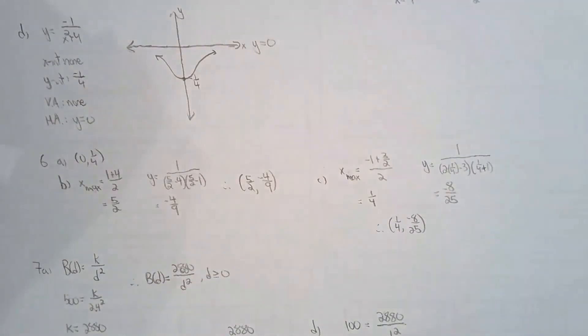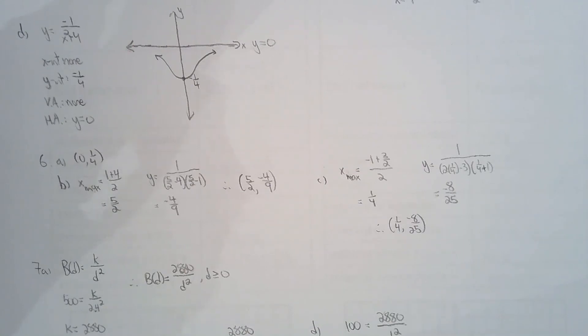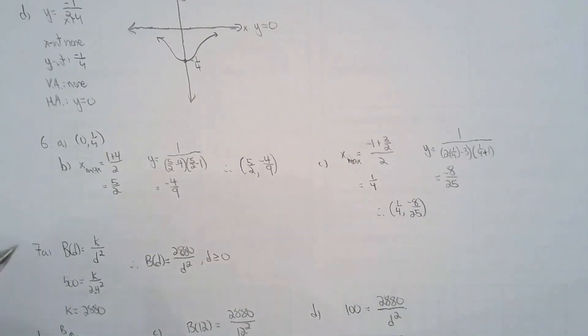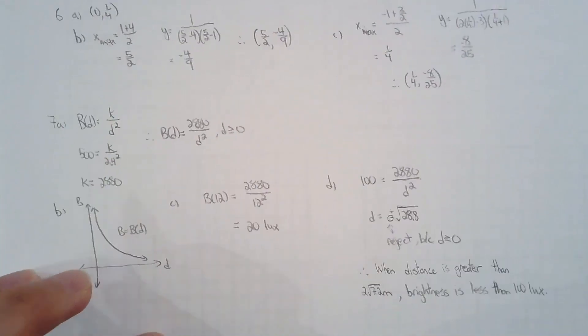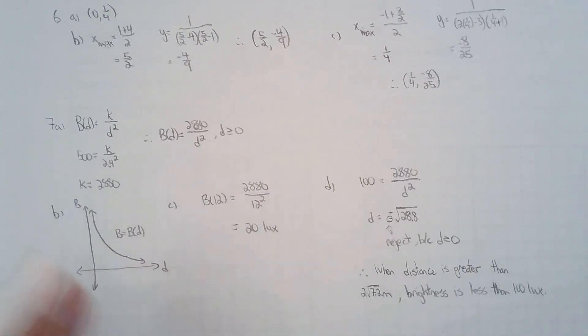For question 7, we have just a very quick word problem where we have two variables, brightness and distance, inversely proportional to the square of the distance. Anyways, solve for the equation. Draw a little graph. Solve some word problems. Not much to say. I would focus on questions 1 through 6. And 7 is just a little bonus. We'll do the word problems very soon.